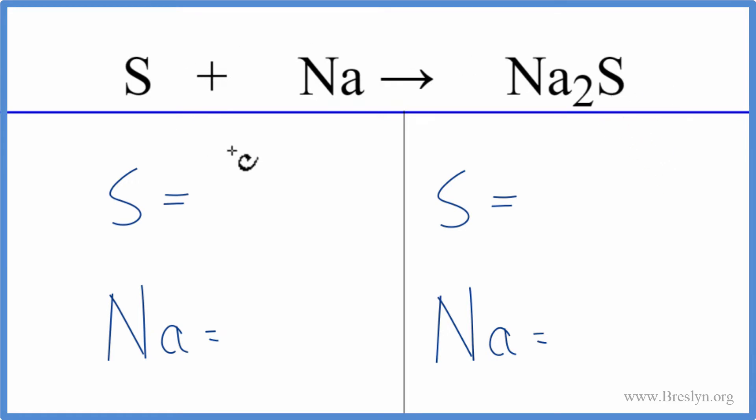The first step on an equation like this is to count the atoms up on each side. So we have one sulfur. It's not written there, but that means there's a one. So we have one sulfur, one sodium.